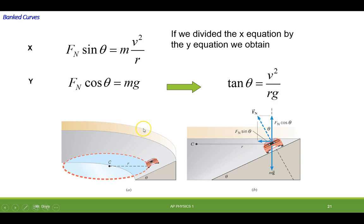So in other words, we can actually determine what angle a road would have to be at for a specific speed at a given radius. And this is relying on just the bank of the curve to keep it into the circle. In other words, there's no friction involved at all.